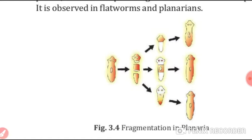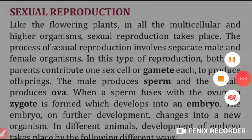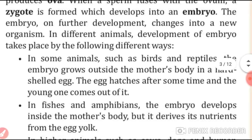Now we will talk about sexual reproduction. Like flowering plants, in all multicellular and higher organisms, sexual reproduction takes place. The process involves male and female gametes. The male gamete produces sperm and the female gamete produces the ovum. When the sperm fuses with the ovum, a zygote is formed, which develops into an embryo, and the embryo develops into a new organism.